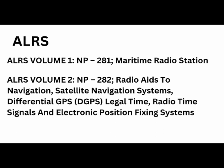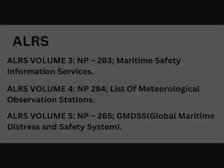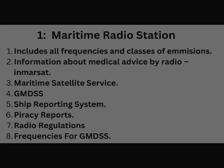Starting with ALRS manuals — the Admiralty List of Radio Signals is divided into six different volumes named one to six. Volume 1 covers maritime radio stations, radio aids to navigation, satellite navigation systems and differential GPS, legal time, radio time signals, and electronic position fixing systems. Volume 3 covers maritime safety information services. Volume 4 is about the list of meteorological observation stations worldwide. Volume 5 is about GMDSS. Volume 6 is about pilot services, port operations, vessel traffic services, and reporting systems.